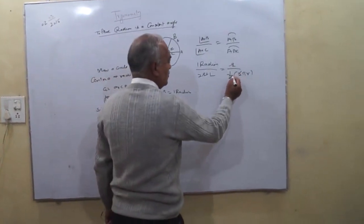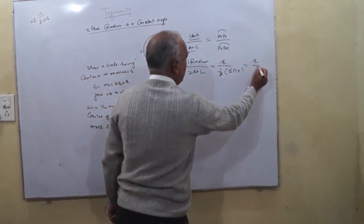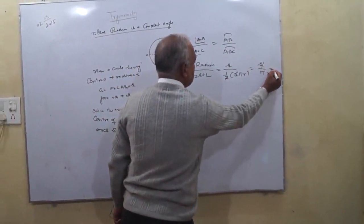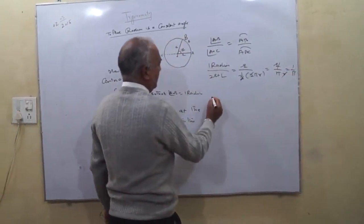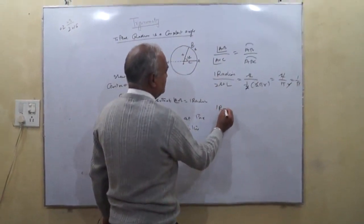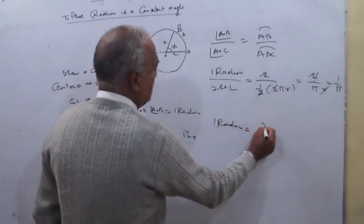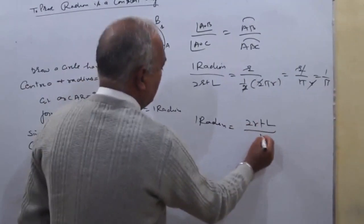Half of two pi R gives pi R. So one radian upon two right angles equals R upon pi R, which simplifies to one upon pi. Therefore, one radian is equal to two right angles upon pi.